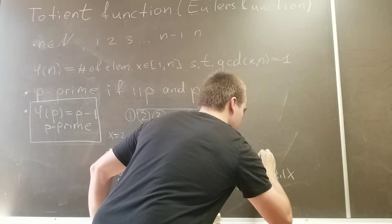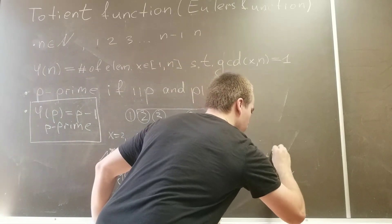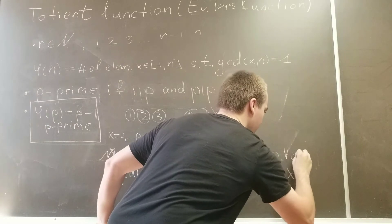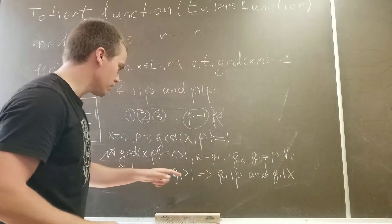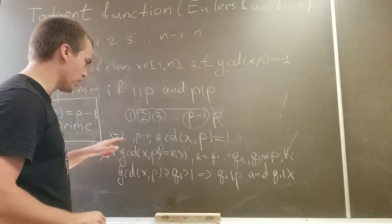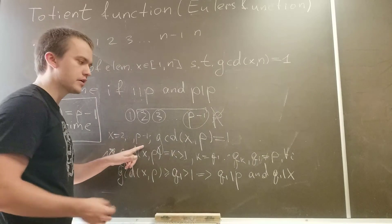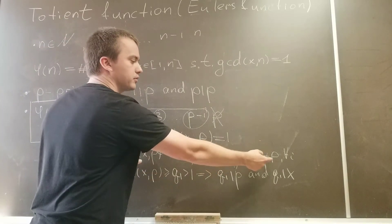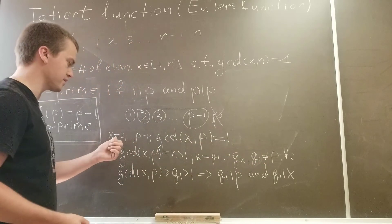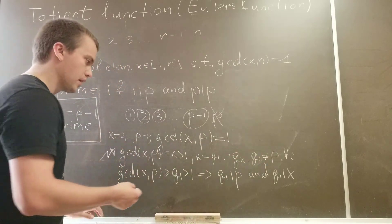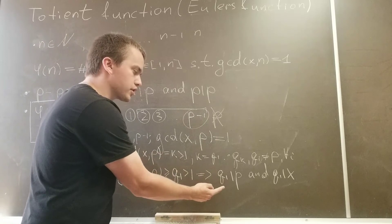That qi doesn't equal to p for any i. And why is this true? Because we're choosing our x strictly less than p, so we cannot have that one of the prime factors is going to be equal to p, because in this case x is going to be bigger than p. So we got contradiction. Why?